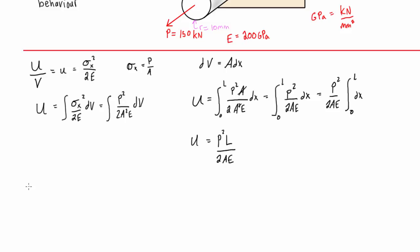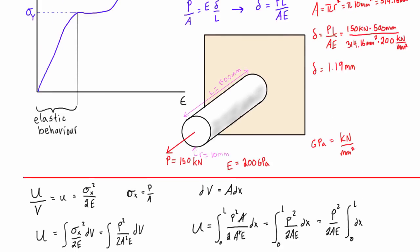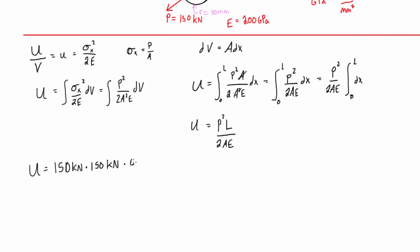We can write elastic strain energy, P is 150 kilonewtons squared, 150 kilonewtons. I'm just going to write it out, because it's squared, I'll just put 2 here, and this will just make it nicer for us to cancel out units, times L, what was L? Let's see, L was 500 millimeters, so that's 0.5 meters.